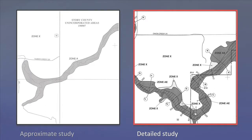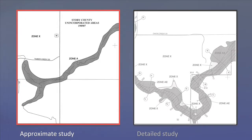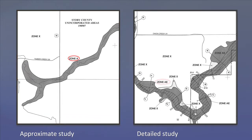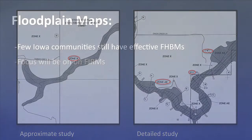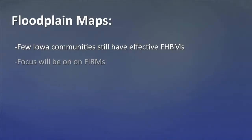The information provided on FIRMs based on detailed studies is different in a number of respects from that provided on FIRMs based on approximate studies. We will highlight these differences later as we review the features found on a FIRM. Because very few Iowa communities still have effective flood hazard boundary maps, we will only discuss FIRMs in the remainder of this video.